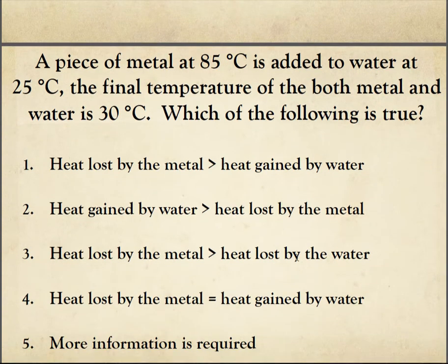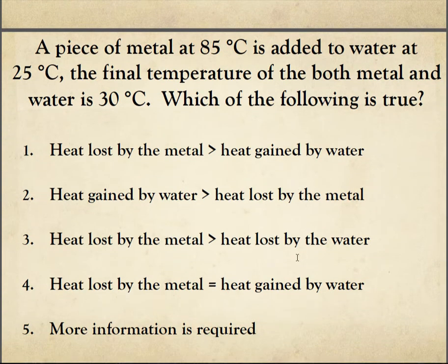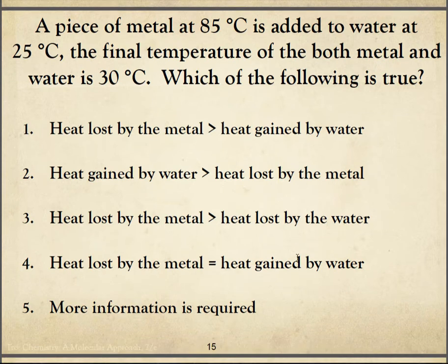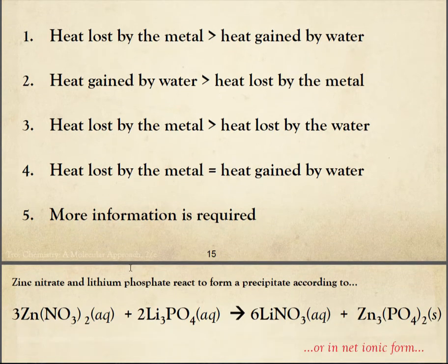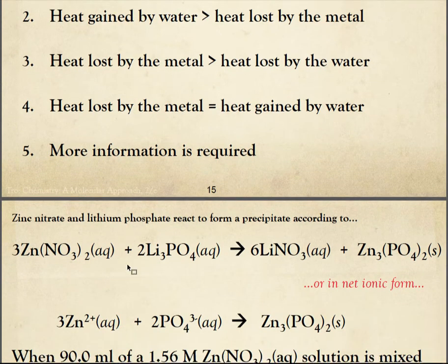A piece of metal at 85 Celsius is added to water at 25 Celsius. The final temperature of both the metal and the water is 30 degrees Celsius, which of the following are true. Heat lost by the metal is more than the heat gained by water? Heat gained by the water is more than the heat lost by the metal? Heat lost by the metal is greater than the heat lost by the water. What? Okay. Heat lost by the metal is equal to the heat gained by the water. I'm going to go with number four. Yeah, they transfer a certain number of heat, and the metal loses the heat, and the water gains the heat, but the amount they transfer is exactly the same.